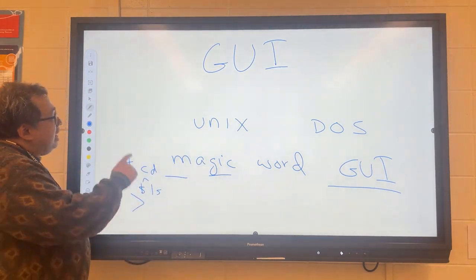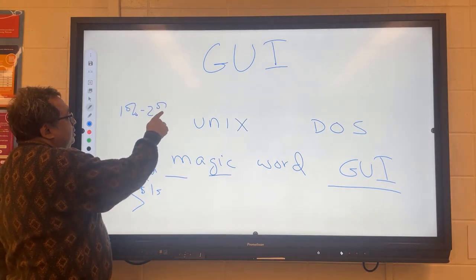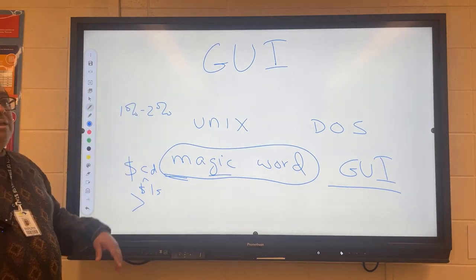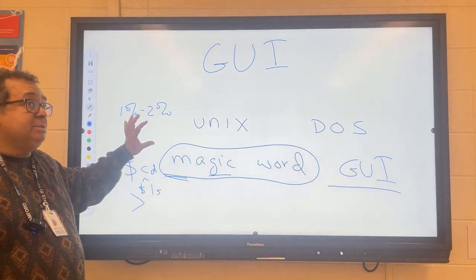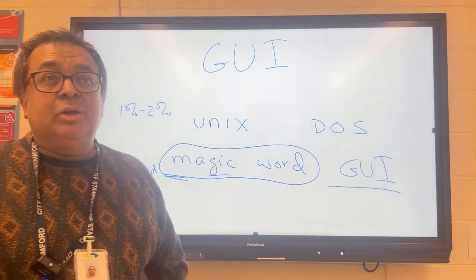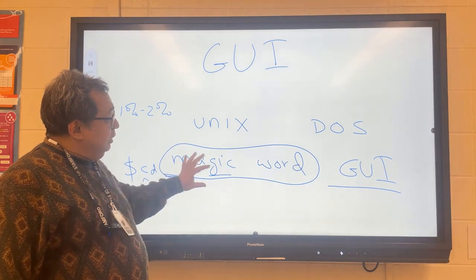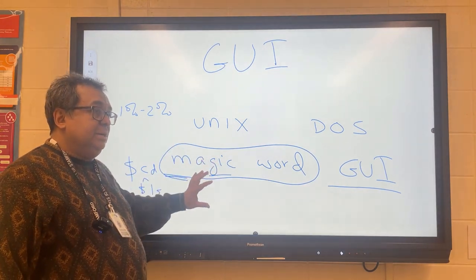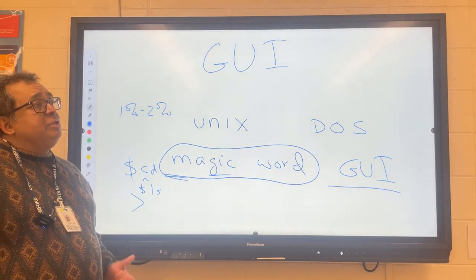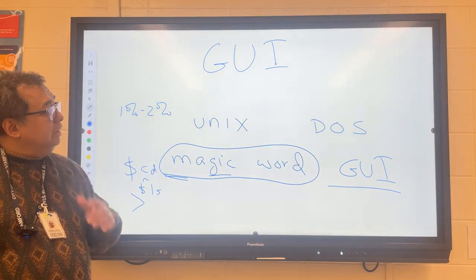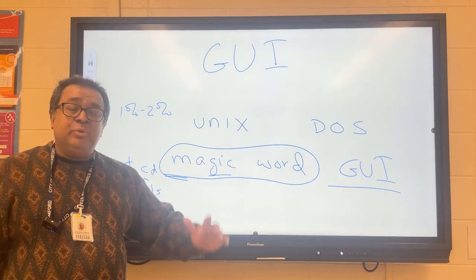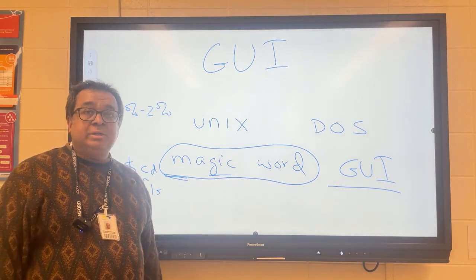Approximately one to three percent of the population still prefers the magic word approach, and they're all related to a particular profession. What kind of people still want to memorize a thousand words? Ms. Banerjee, there's one profession that really prefers the magic word to this day — computer programmers. And IT people also. Why do they not want to deal with the GUI when it's so much friendlier with the nice pretty pictures and little graphics?